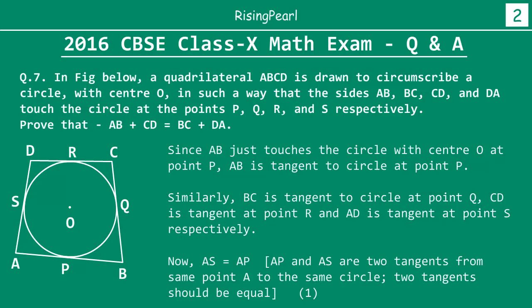Because AS and AP are tangents drawn from the same point A to the same circle, we can say that AS is equal to AP. Two tangents from the same external point are equal. We are calling this equation number one.